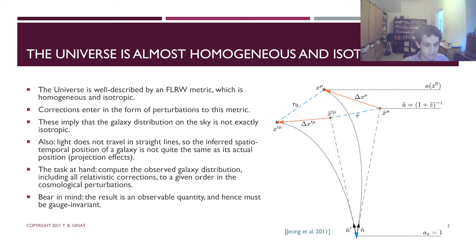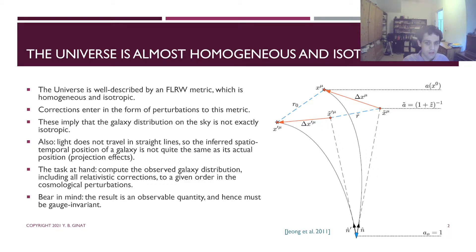Before beginning, I'll just do a brief recap of projection effects. Projection effects arise because the universe is not exactly an FLRW metric — it's approximately so — and light rays are not exactly straight lines, only approximately so. The difference between the actual position of a galaxy and the observed position of that galaxy arises because of cosmological perturbations, because light does not move in straight lines, and because of gravitational redshift.